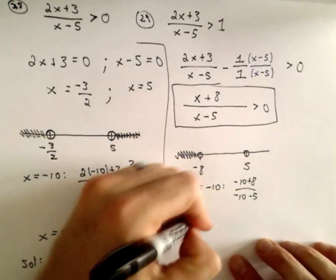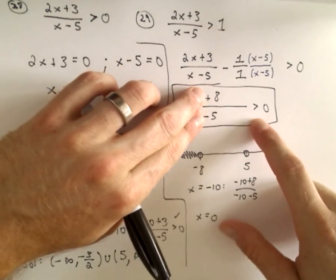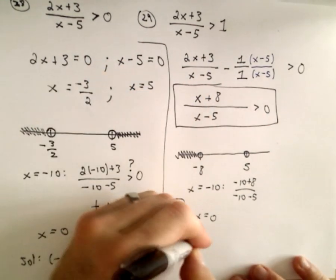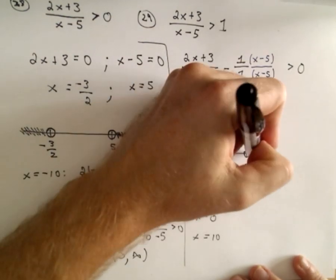If we use x equals 0, just like before, we'll get 8 over negative 5, which is a negative, which is not greater than 0. And say, if we use x equals positive 10, we're going to get a positive over a positive, which will work.